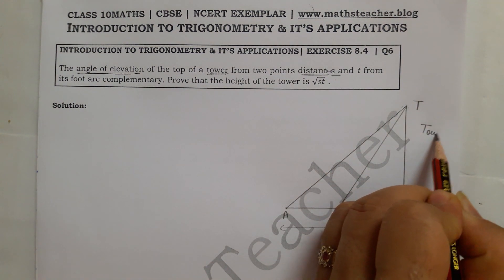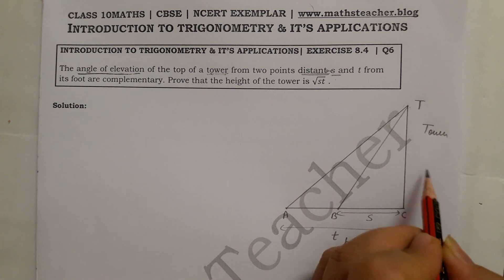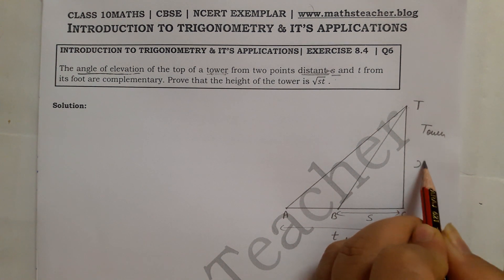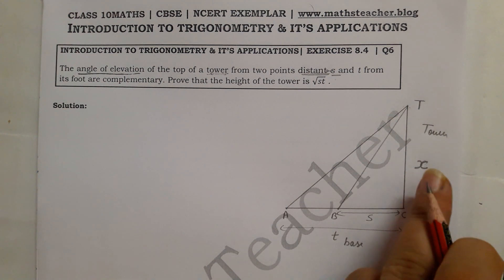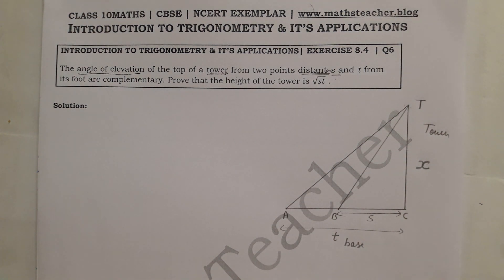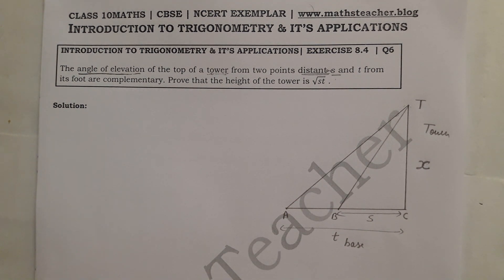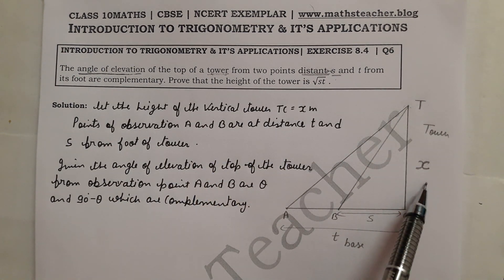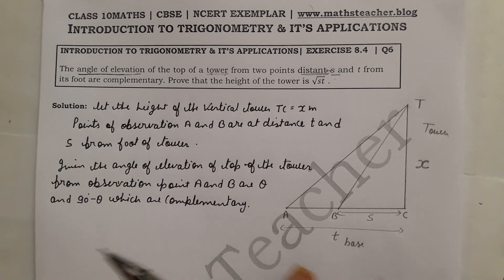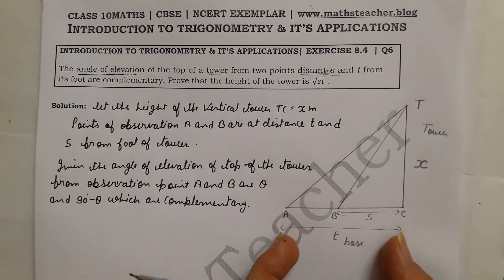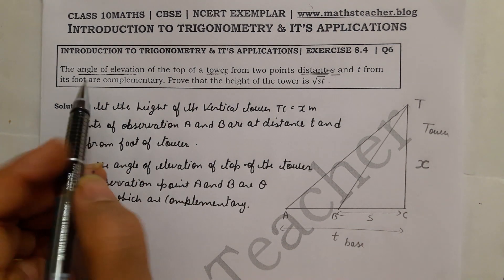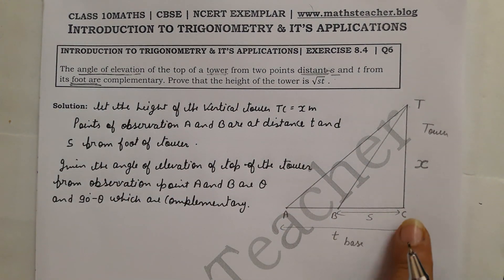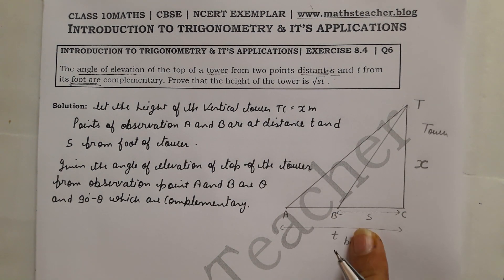Let the height of the vertical tower TC equal to x. The points of observation A and B are at distances T and S respectively from the foot of the tower C. So the distance from C to A is T, and from C to B is S.